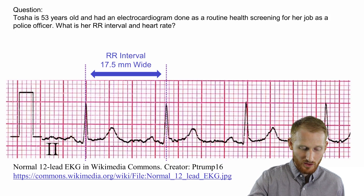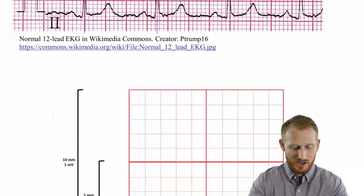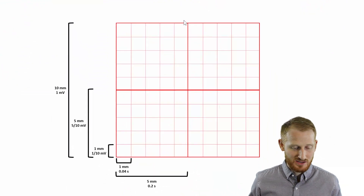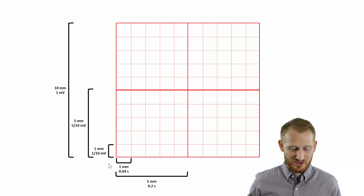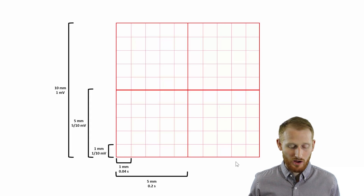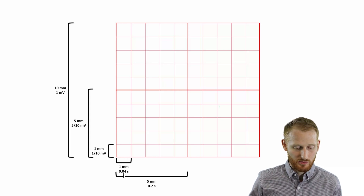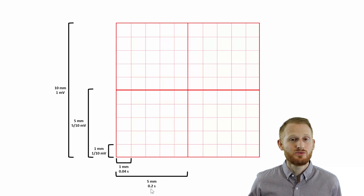We need to know how much time each of those millimeters is worth. We can look at a diagram like this, which shows what each of those blocks means on both the y-axis and x-axis. The y-axis represents voltages, but the x-axis is time, which is what we care about. For every one small red block — one millimeter wide — that is 0.04 seconds. So if you have five of those, you would have five millimeters, or 0.2 seconds.